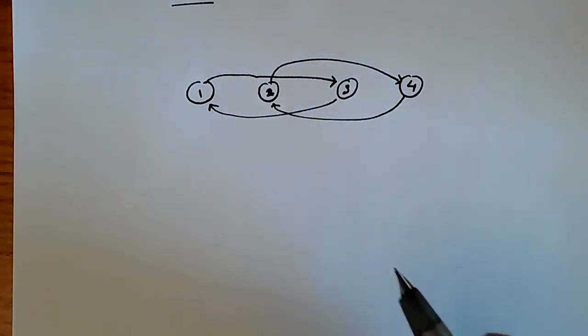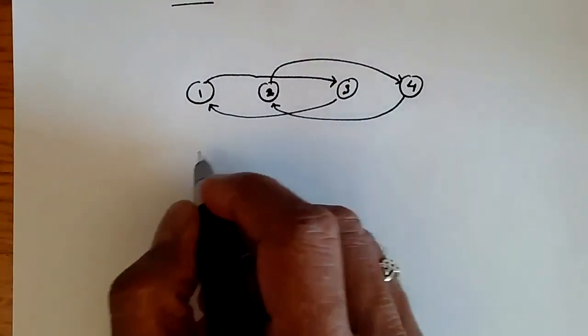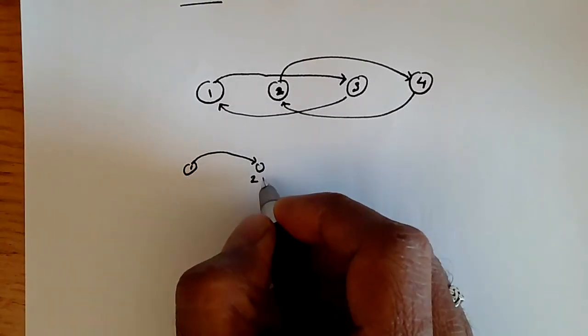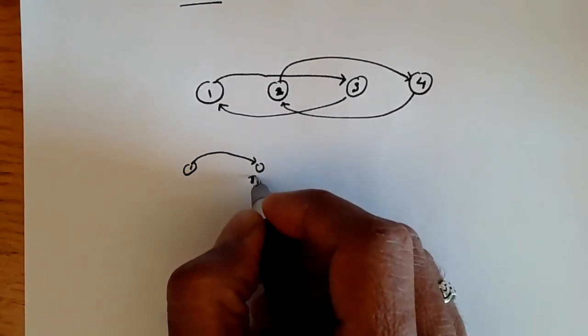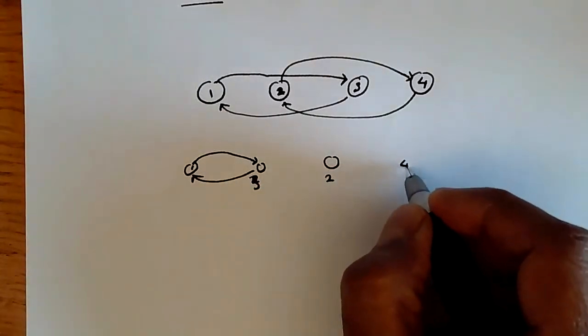But you can't go from 1 to 2 or 2 to 3. So in fact, we can separate them into two chains like this: 1 and 3, and 2 and 4.